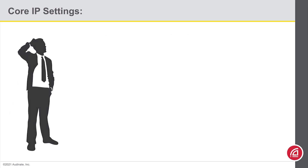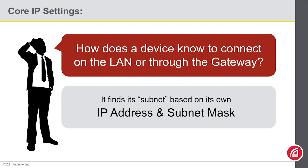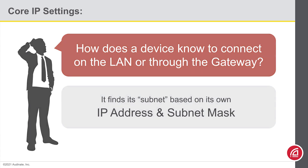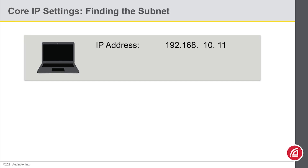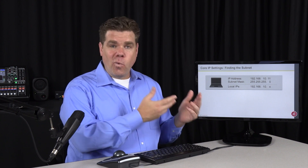This brings up a question: how does our network device know if the destination is found on the local area network, or if it should contact the gateway? It figures that out by using its own IP address and subnet mask. Many of you will probably know this intuitively. Let's suppose my computer on my home network has an address of 192.168.10.11. I think many of us would intuitively assume that the subnet mask is 255.255.255.0, and devices on the local area network will have an address in the range of 192.168.10.something. Who knows where we learned this — we just know it is so.